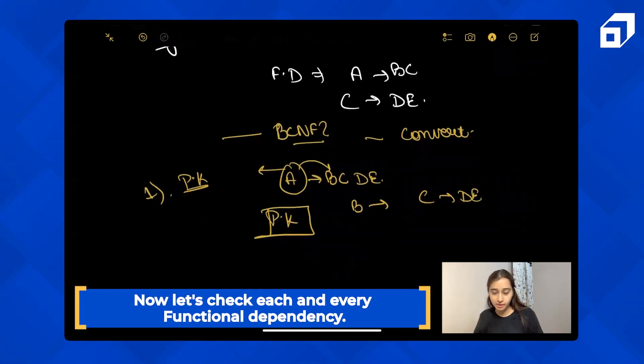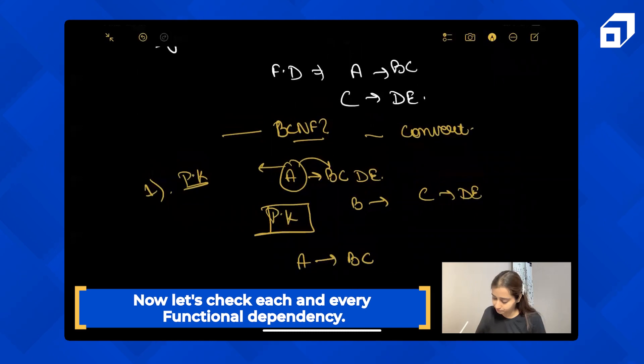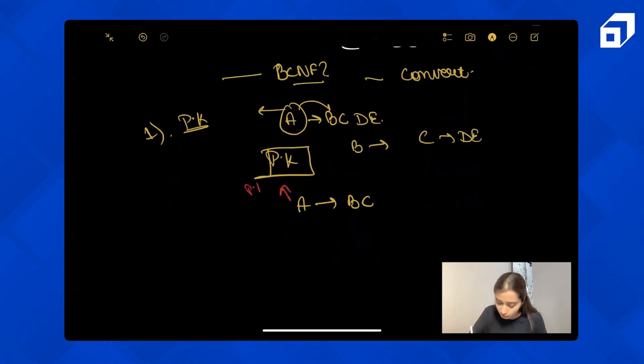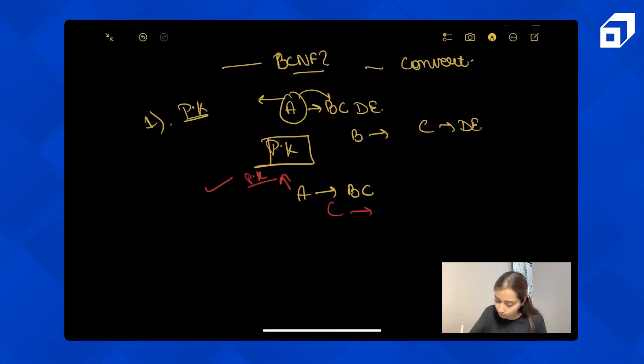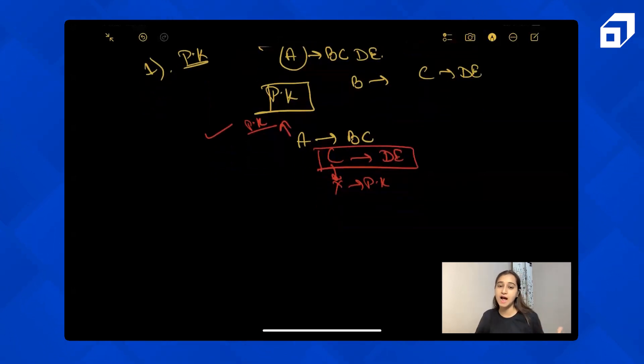Now let's check for each and every functional dependency. The very first one is A to BC. Now A is a primary key, so it follows BCNF. Now the next functional dependency is C to DE. Does it follow BCNF? No. Because it just says that this X should be a primary key, but C is not a primary key. So it violates BCNF.